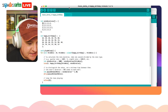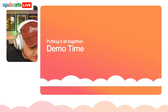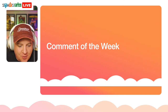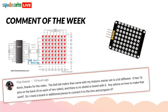Now for the comment of the week. Chip was asking about the 8×8 LED matrix that came with his Arduino starter kit. It has 16 pins on the back — 8 on each of two sides — with no shield or driver board. He's asking if he needs additional pieces to connect and program it. The types I recommend are the KeyStudio ones, which have the driver built in, exposing just four pins to the Arduino, making them very easy to program.